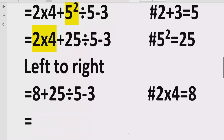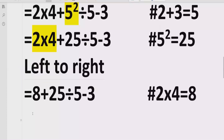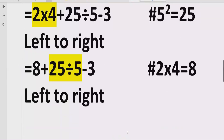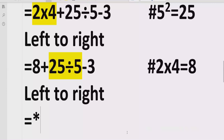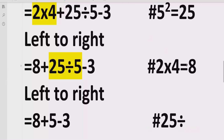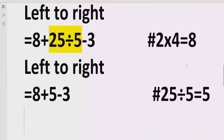Moving forward to solve division and multiplication again, here we have the next part which is division. So we now have 8 plus 25 divided by 5, minus 3 written as it is. We solve 25 divided by 5, which equals 5.